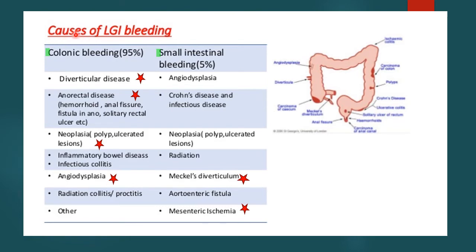This table lists the common causes of lower GI bleeding according to site. Colonic bleeding accounts for 95% of cases, with diverticular disease, anorectal diseases especially hemorrhoids, neoplastic lesions such as polyps and cancer, and angiodysplasia being the most common. The small intestine contributes only 5% of bleeding cases; of interest is Meckel's diverticulum in young adults and children, and in older individuals, mesenteric ischemia.